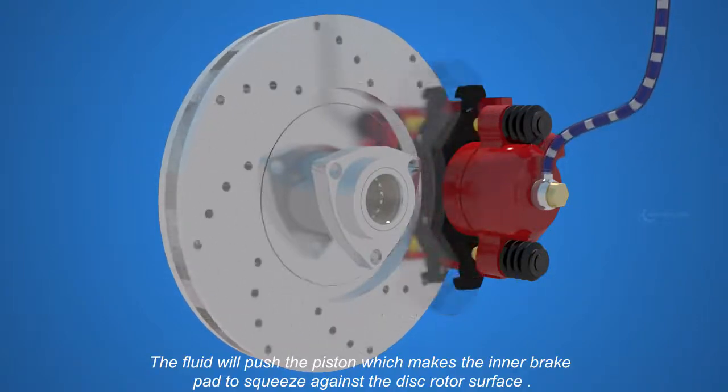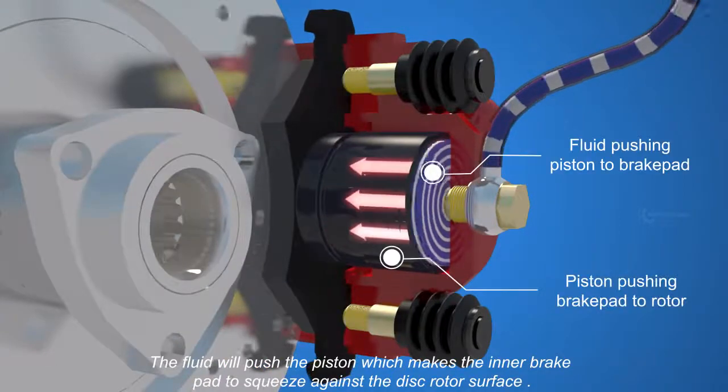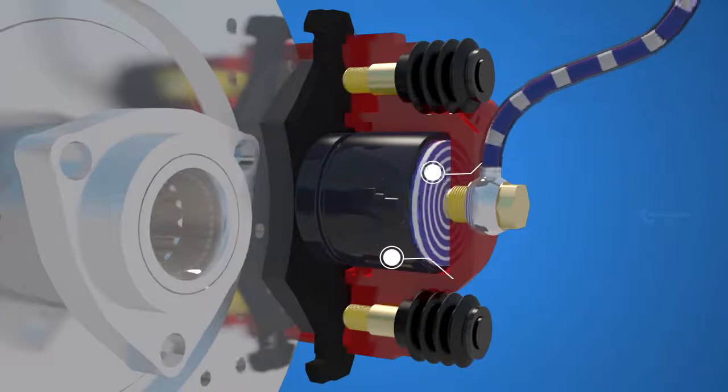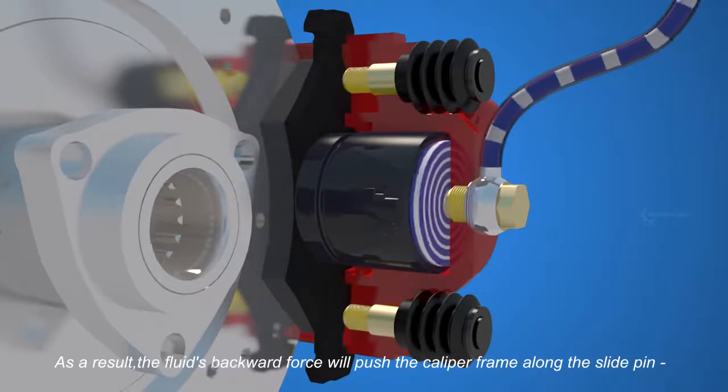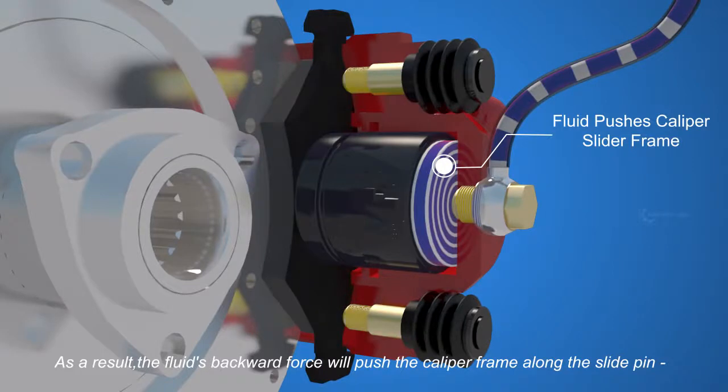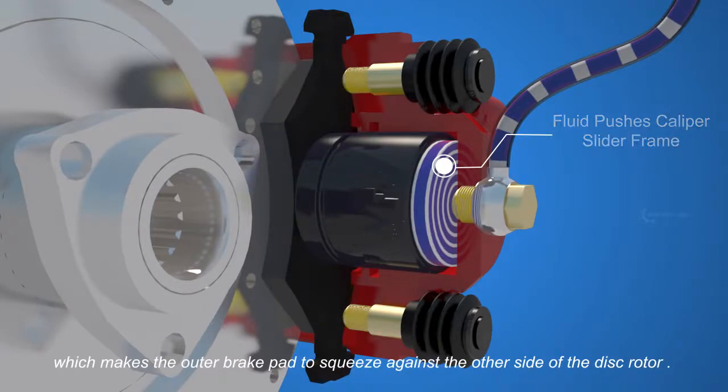The fluid will push the piston, which makes the inner brake pad to squeeze against the disc rotor surface. As a result, the fluid's backward force will push the caliper frame along the slide pin, which makes the outer brake pad to squeeze against the other side of the disc rotor.